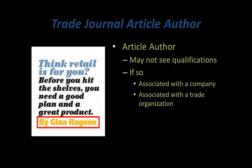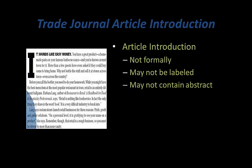With a trade journal article, you may or may not see the qualifications of the author, unlike a scholarly journal article. If the qualifications of the author are included, they will often be associated with a company or a trade organization instead of a university.